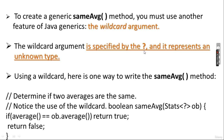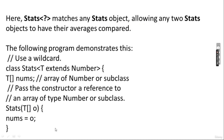To create a generic sameAverage() method, you must use another feature of Java generics: the wildcard argument, represented by a question mark (?), which represents an unknown type. Here is how to write the method: boolean sameAverage(Stats<?> ob). The unknown type means you don't know the type of the array being passed. If average() equals ob.average(), return true; otherwise return false.